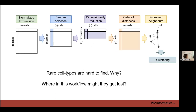Now a question: rare cell types are hard to find. Where do they get lost in our pipeline? You can rely on the default k of 20 and play around with it — no one has really benchmarked the right k. The Seurat people did some benchmarking but it was essentially a footnote. Twenty seems to work based on datasets from five to seven years ago; you may want to increase it if you're using larger modern datasets.